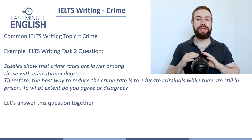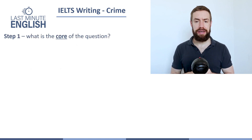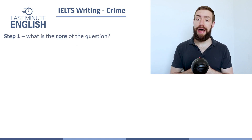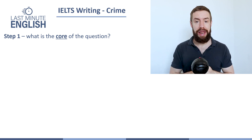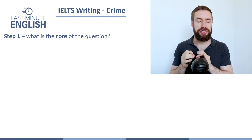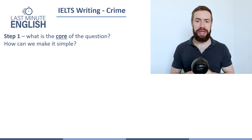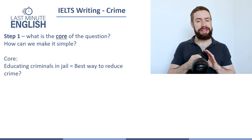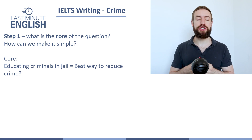In this video, we're going to be developing and writing this answer together. The first step we have to think about is finding the core of that question. It's quite a long question and we can get a little bit distracted by the different parts. It's important whenever you get an IELTS writing task two question to try to break it down and turn it into one simple core version. The core of this question is: educating criminals in prison is, or is not, the best way to reduce crime.